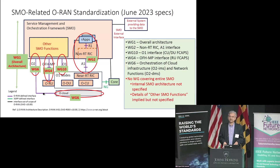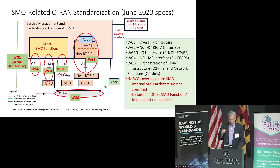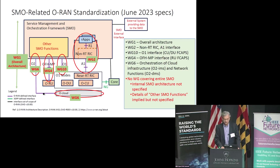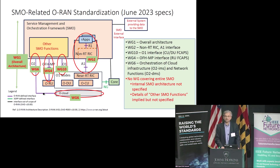How is this actually standardized? If you look at ORAN working groups: working group one covers the overall architecture; working group two covers the A1 interface and also the non-real-time RIC and the rApps — that's the closest you get to details about what's happening inside the SMO. Working groups 4 and 6 respectively cover the O1 interface, open fronthaul interface in hybrid mode to the RU, and the O2 to the cloud. The SMO is a very critical aspect of the ORAN architecture, but there is no working group covering the SMO architecture — the internal SMO architecture is not specified as of the published specs even in June.